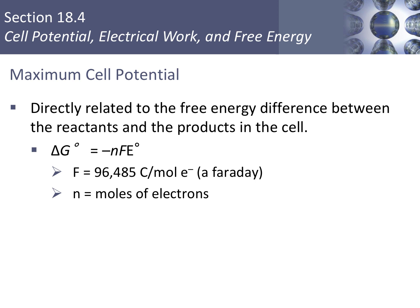This equation is on your equation sheet. N is the number of moles of electrons moving through our cell. F is called a Faraday — it's 96,485 coulombs per mole of electrons, also on your equation sheet. E is the cell potential in volts, which breaks down unit-wise as joules per coulomb of charge. When we look at the units, moles cancel and coulombs cancel, leaving delta G, our free energy difference, in joules.